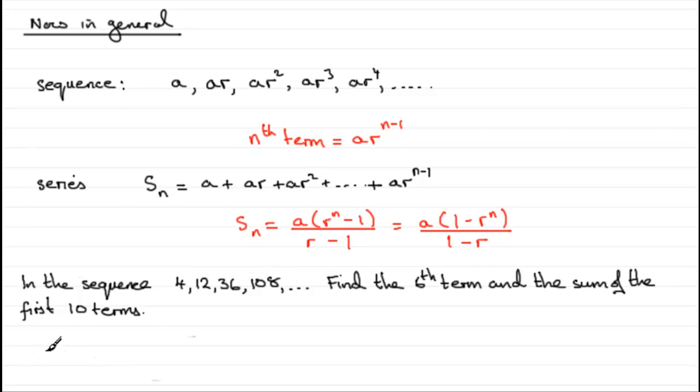So when it comes to working out what the sixth term is, then according to our formula for the nth term, it's going to be ar to the n minus 1. a being the first term, which in this example is the 4, so it would be 4.